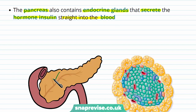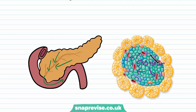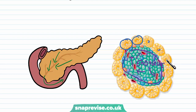The exocrine glands send substances straight into the ducts and into the outside world tubes. Looking at a microscopic image, the pancreas also contains endocrine cells or glands which send hormones straight into blood vessels to be distributed around the body. So the pancreas has both endocrine glands and exocrine glands — you can see the ducts that lead to the small intestine but never lead into the blood.